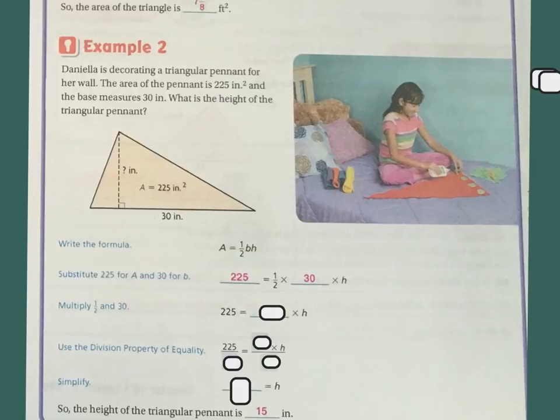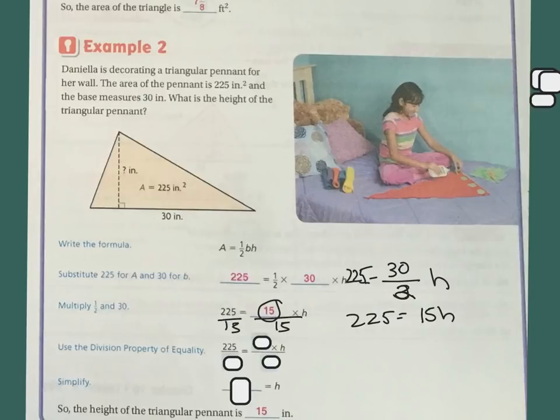So now what we need to do is we need to isolate the variable. So if I look at this one, I've got 1 times 30 is 30. So this is now 30 over 2h. So 30 divided by 2. So now I've got 225 equals 30 divided by 2, which is 15h. So now I have 15h. And so I want to isolate the variable. In order to do that, I've got to get rid of this 15. And since this is multiplication, the opposite of that is division. So I'm going to divide both sides by 15, because whatever I do to the one side, I have to do the other side. So I'm going to divide this side by 15 and this side by 15, which makes my 15s cross out, and I'm left with just h on this side. And 225 divided by 15 is 15. So h equals 15.